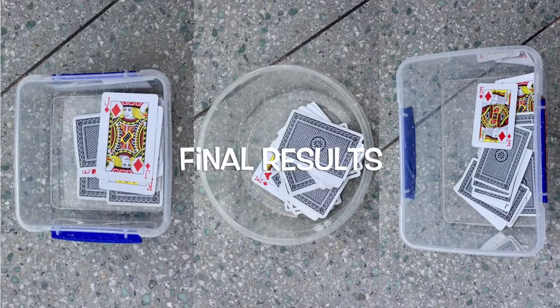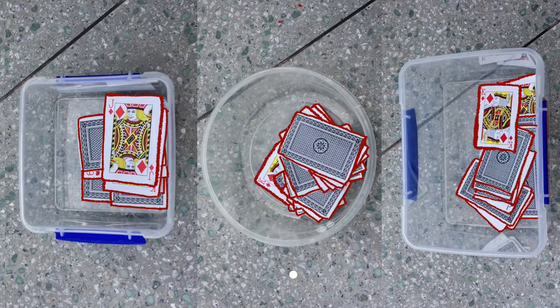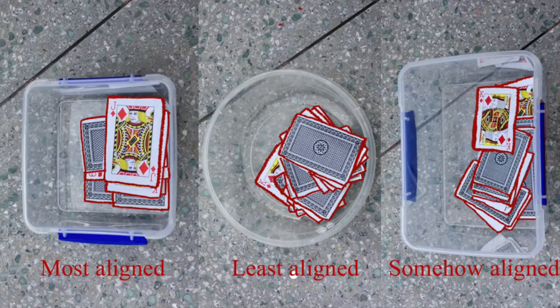And for the rectangular container in a smaller size, we still got good alignment of the poker cards, but the overall effects were more remarkable with the decreasing size of the container.